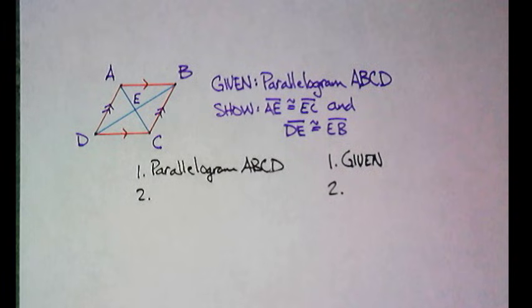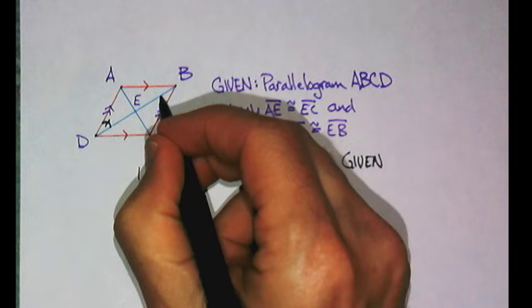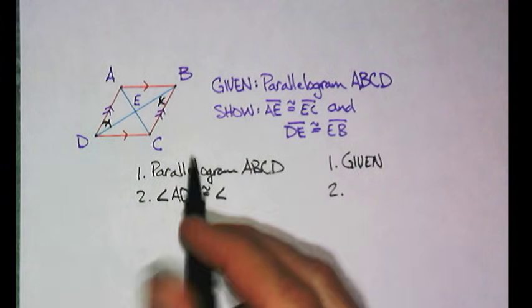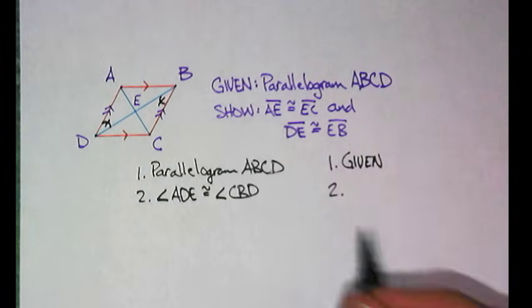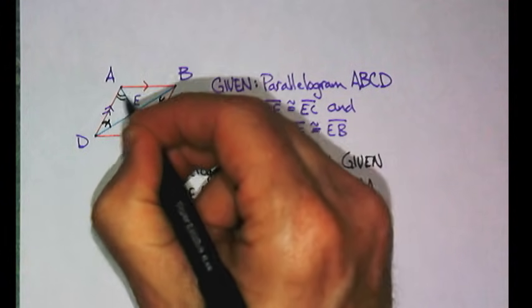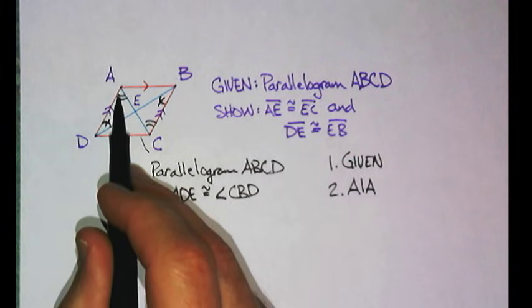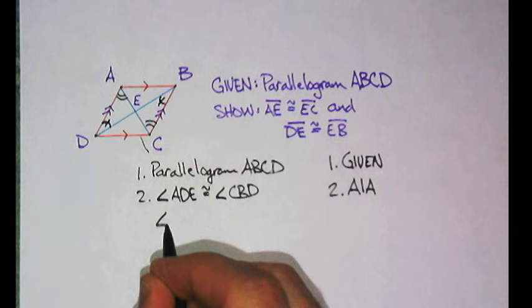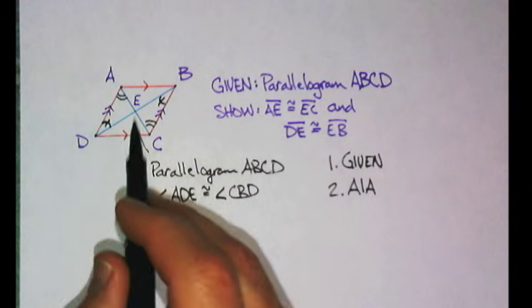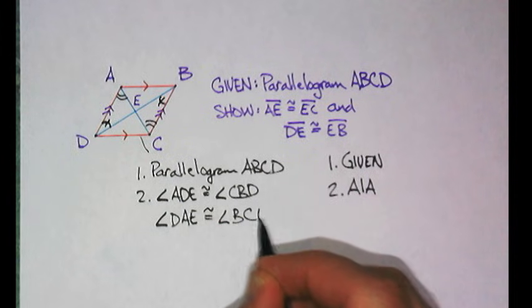Then, we're going to need some angles, because I don't think I can get all the sides. Let's do the inside ones. Let's say this angle must be congruent to this angle. That's angle ADE must be congruent to angle CBD. And why, of course, that's alternate interior angles. I think I could do the same thing right here. Those are, these two lines are parallel, and those are alternate interior angles as well. You'll see that AIA becomes a powerful, powerful conjecture for this class. So that angle is DAE. And this one is BCE. Also by AIA.